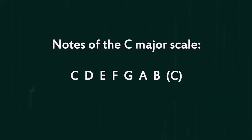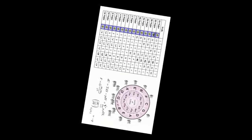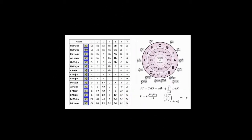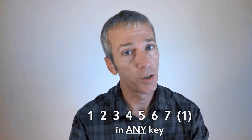In theory, we often times use numbers in place of those letters. The formula for the major scale in any key is 1, 2, 3, 4, 5, 6, 7. That's the kind of thing an idiot would have on his luggage! So you can either try to learn all of this, or you can just remember this. A lot easier, isn't it?